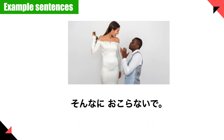Next example sentence: そんなに怒らないで — don't be so mad. そんなに怒らないで — don't be so mad.